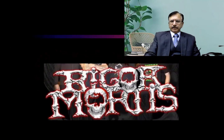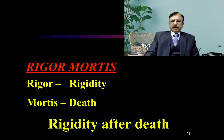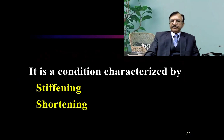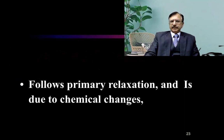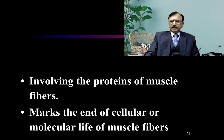Now, rigor mortis. This is a picture showing the body in rigor. Rigor means rigidity and mortis means death, so this means the rigidity after death. It's a condition characterized by stiffening, shortening, and opacity of the muscles. It follows primary relaxation and is due to chemical changes involving the proteins of the muscle fibers, and it marks the end of cellular or molecular life of the muscle fibers.